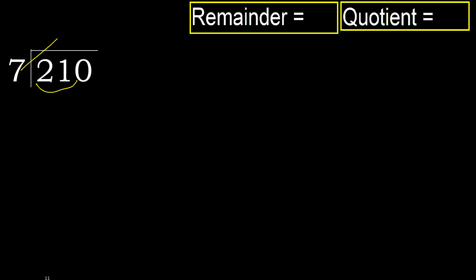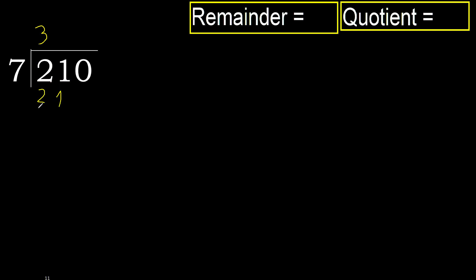7 multiplied by 4 is 28, which is greater. 7 multiplied by 3 is 21, which is not greater. 21 minus 21 is 0. Next.